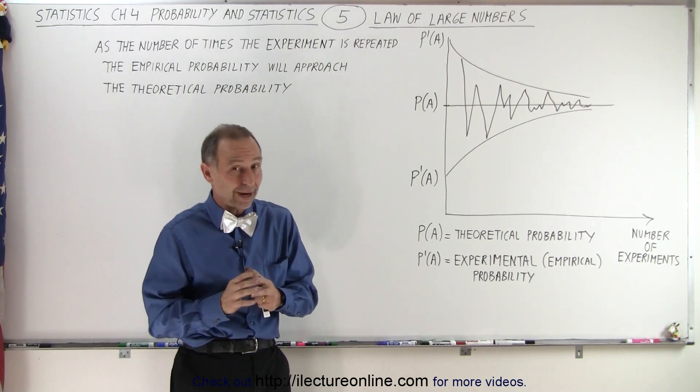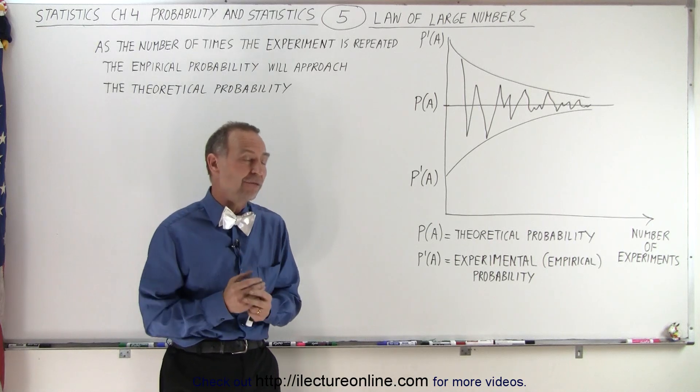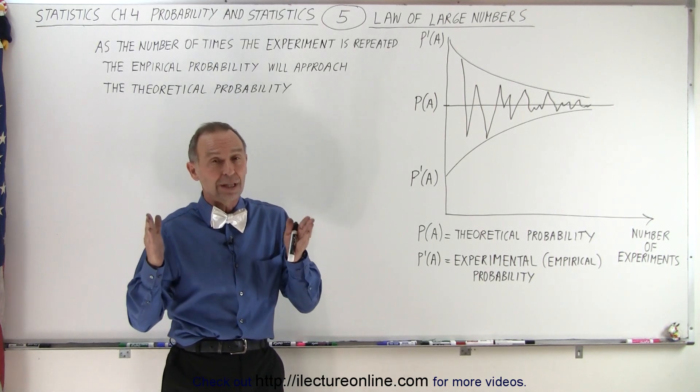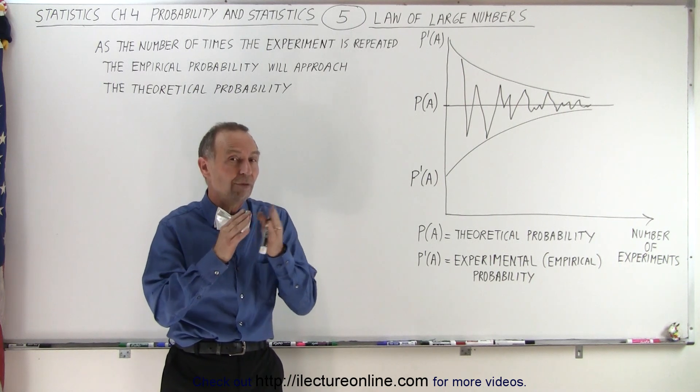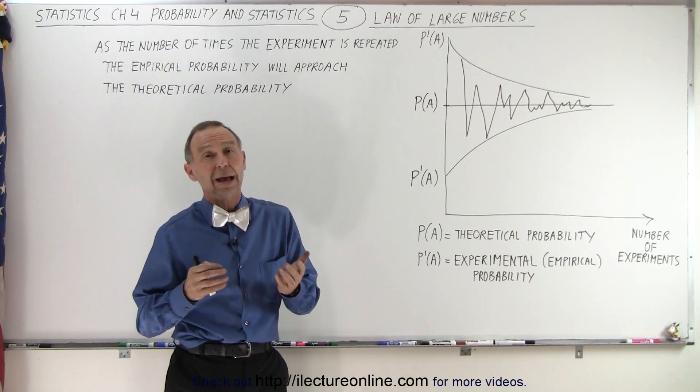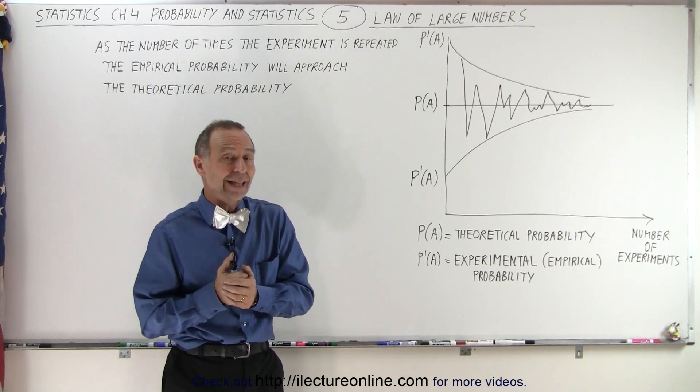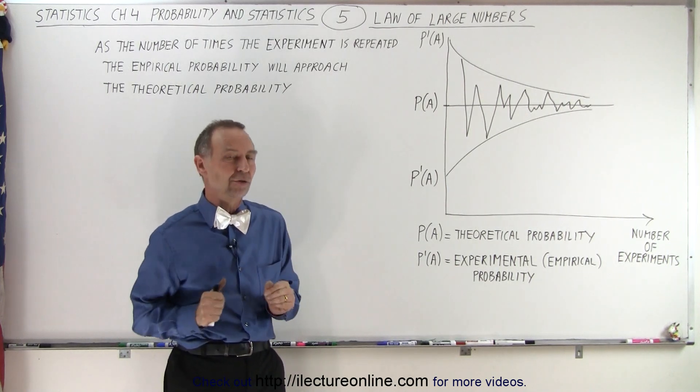You'll be much closer to 50-50, perhaps 60-40 or 55-45. And when you toss the coin 1,000 times, you're going to get much closer to a 50-50 arrangement, perhaps 490 heads and 510 tails or something like that. They'll be very close together.